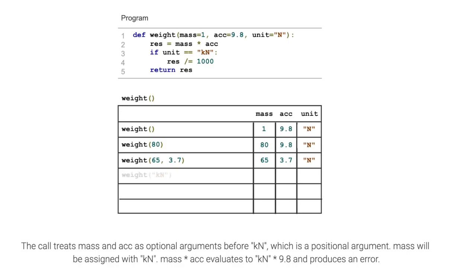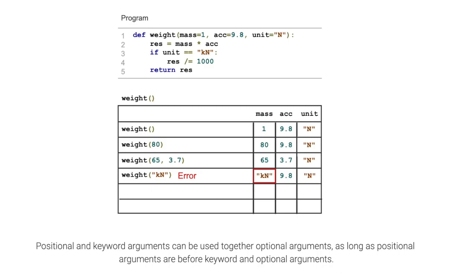The call treats mass and acceleration as optional arguments before kN, which is a positional argument. Mass will be assigned with kN, so mass times acceleration evaluates to kN times 9.8 and produces an error. Positional and keyword arguments can be used together with optional arguments, as long as positional arguments come before keyword and optional arguments.